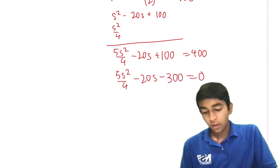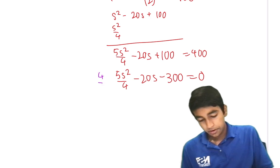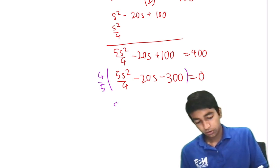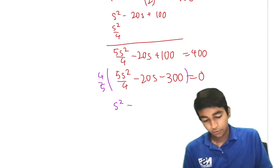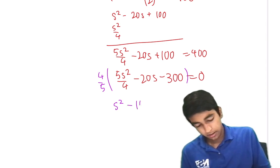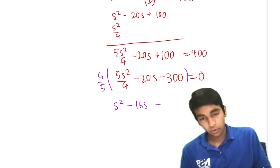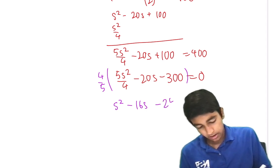And then we multiply the whole equation by 4 fifths, make the first term 1. So 4 fifths is s squared minus 20s times 4 fifths, which is 16s, minus 300 times 4 fifths, minus 240. It equals 0.